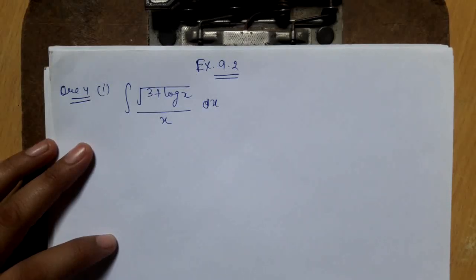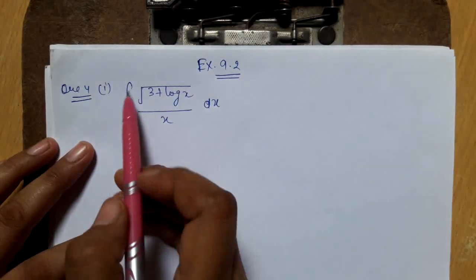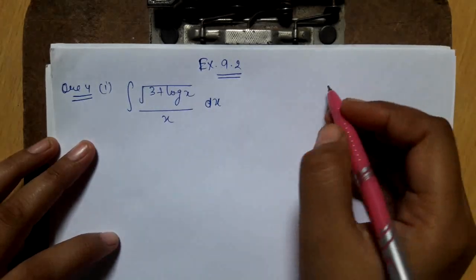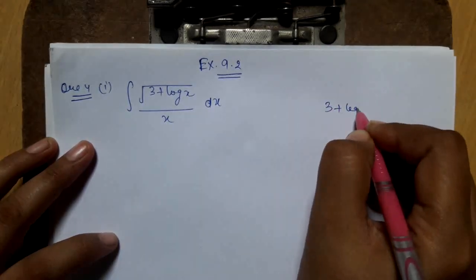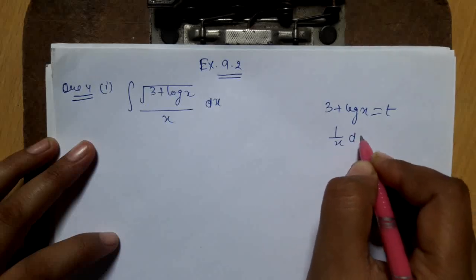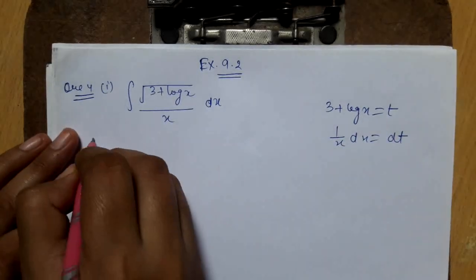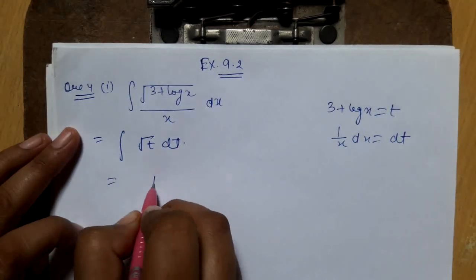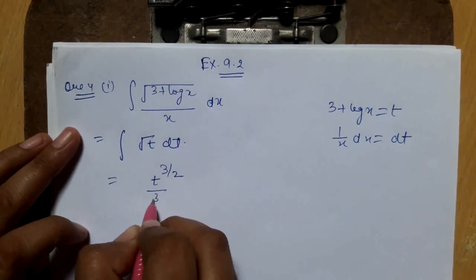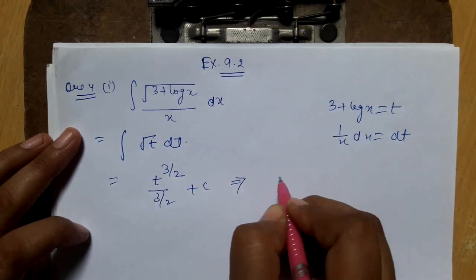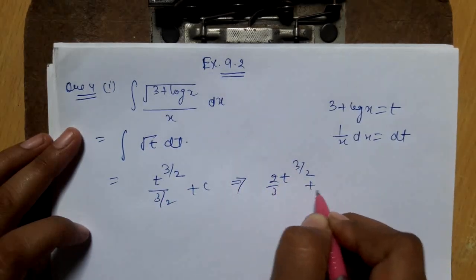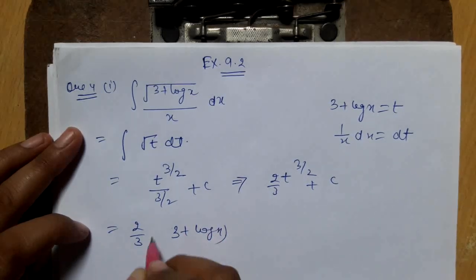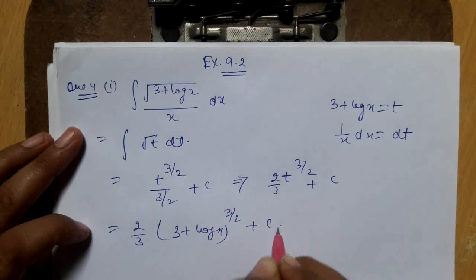Question 4, part 1: integration of √(3 + log x) / x dx. Put 3 + log x = t, so 1/x dx = dt. The integral becomes ∫√t dt, which equals t^(3/2) / (3/2) + c. Simplifying: (2/3)(3 + log x)^(3/2) + c.